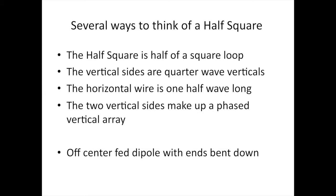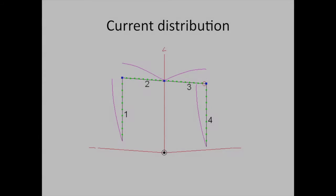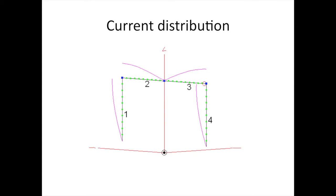There are several ways to think of a half square. The half square is half of a square loop. The vertical sides are quarter wave verticals. The horizontal wire is one half wave length long. The two vertical sides make up a phased vertical array. This is sort of like an off-center fed dipole with the ends bent down. This is a depiction from EZNEC modeling. This shows the top half of a square loop using four segments. The current distribution, note the low impedance points at the two top corners.